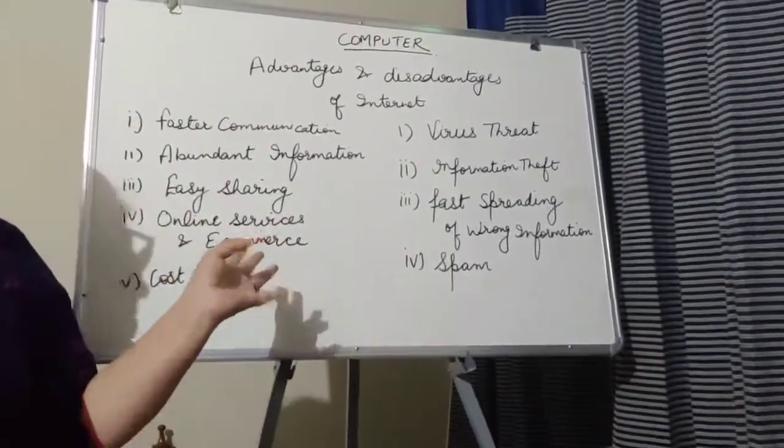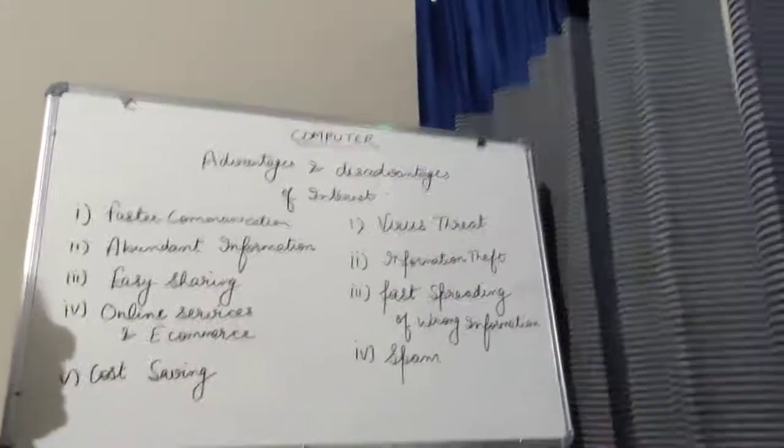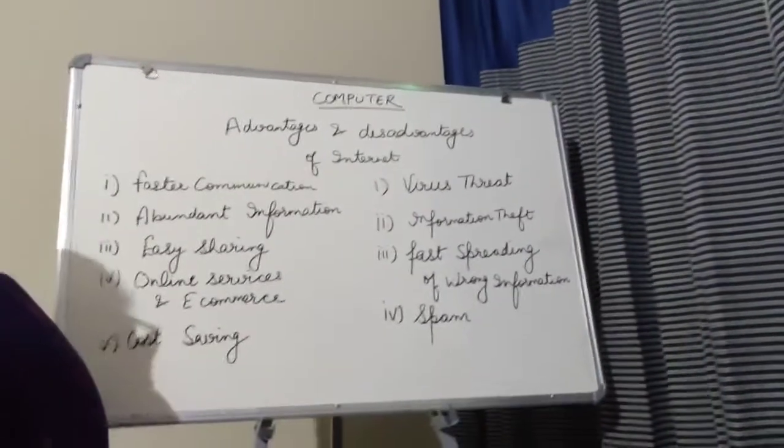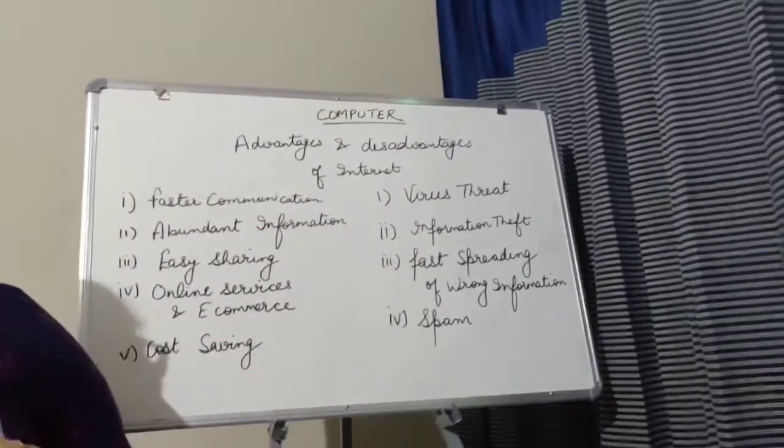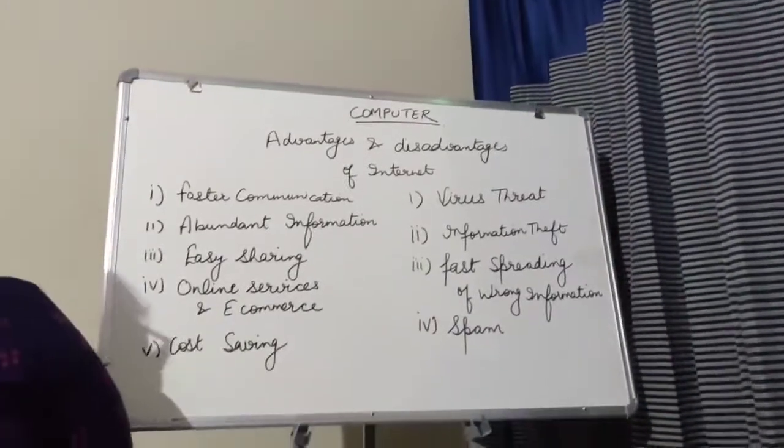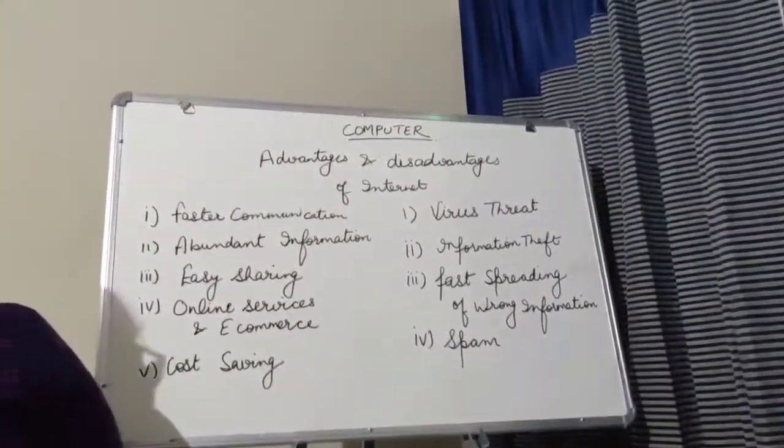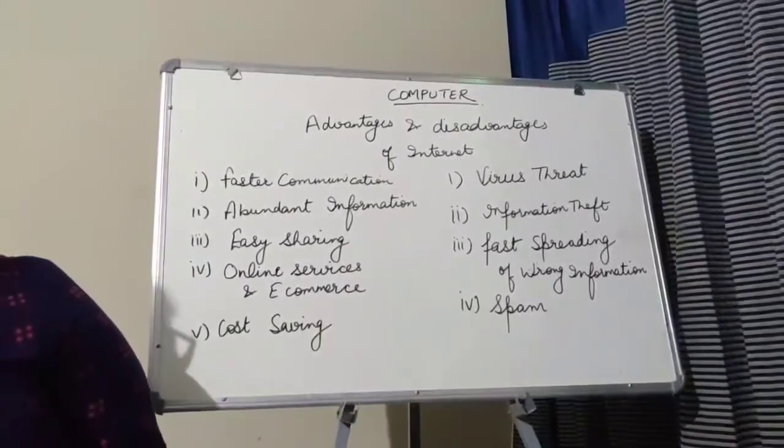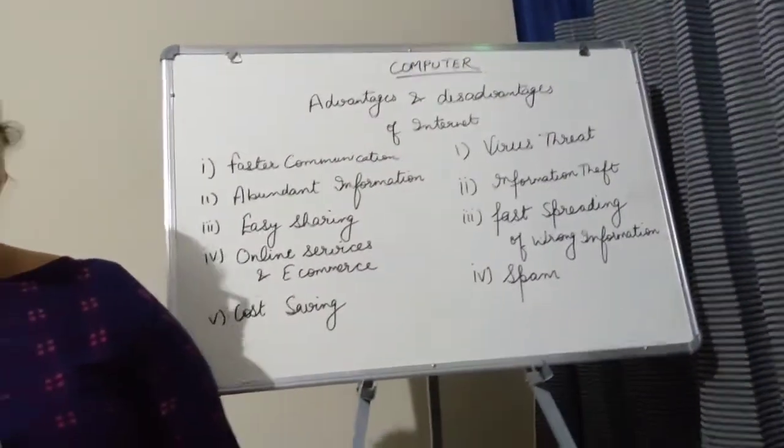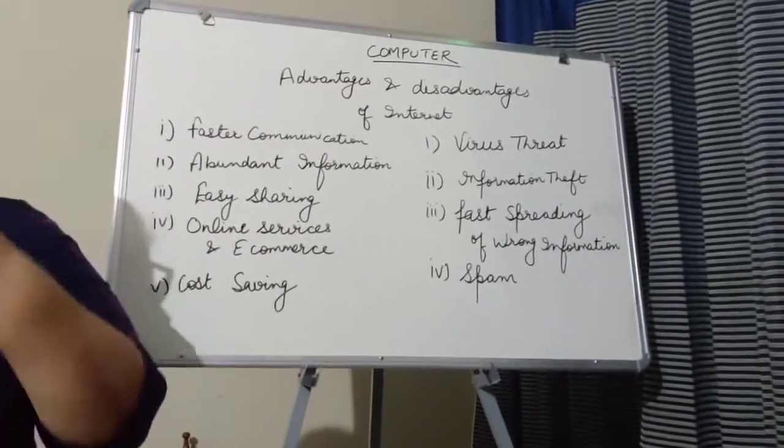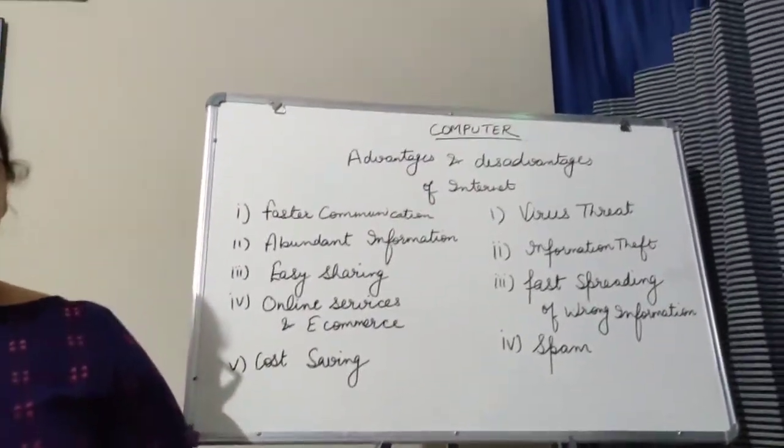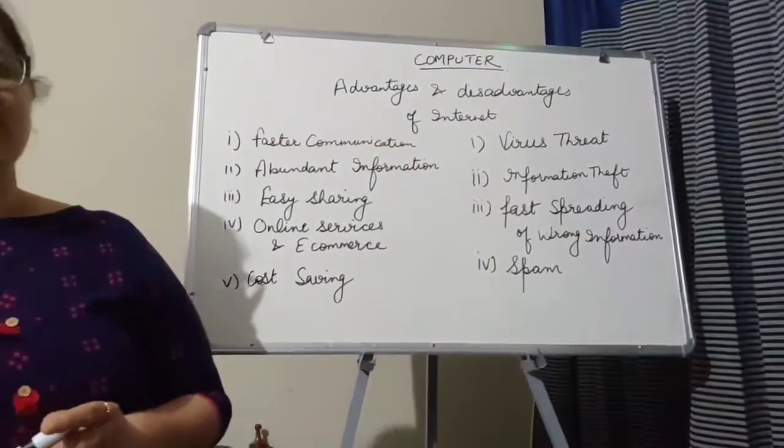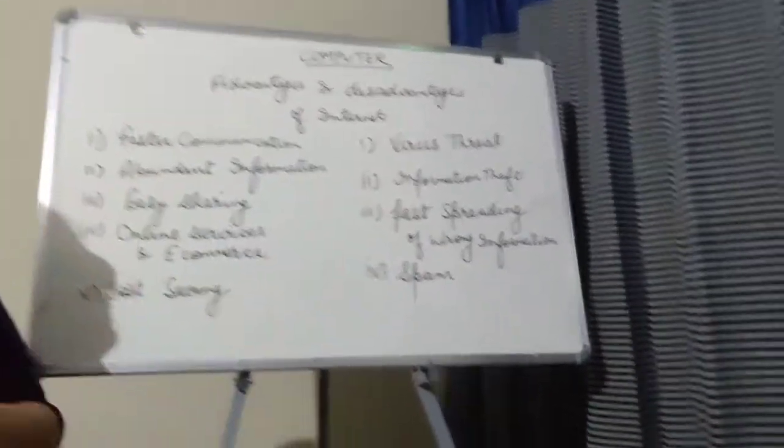These are the advantages of internet. Ab internet ke fayade hai to kuch nuqsaan bhi hai. These are disadvantages. First of all virus threat. Virus threat kya hota hai. Aapke computer me kuch aise harmful program aa jate hai. So aapke computer ko nuqsaan pahunchate hai. Nuqsaan kaise pahunchate hai. Aapke computer ki speed ko slow kar dete hai. Aapke computer me jo data hai us ko corrupt kar dete hai. Corrupt matlab us ko kharab kar dete hai. That is not readable. So these all can done through virus. So first one disadvantages is virus threat.